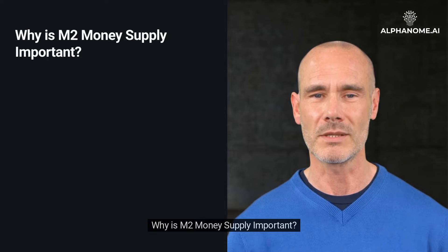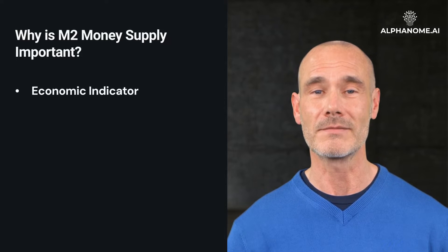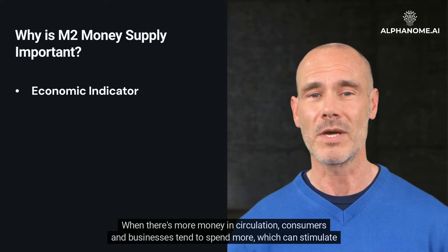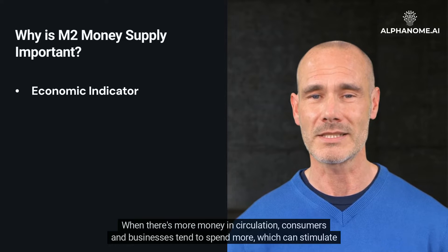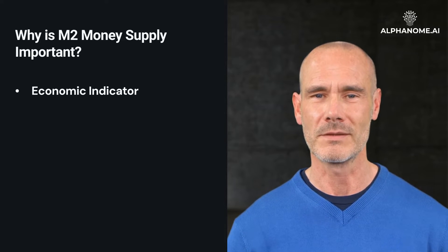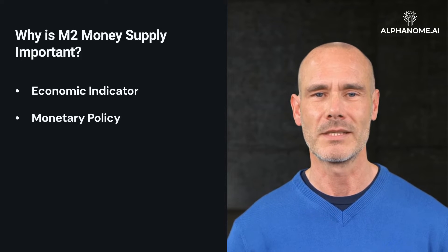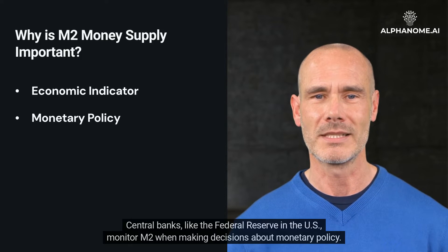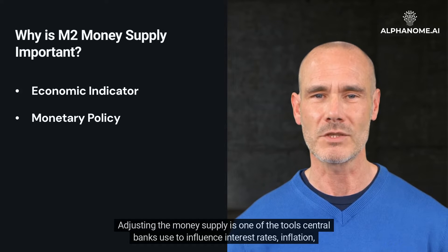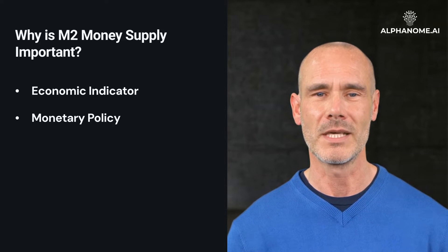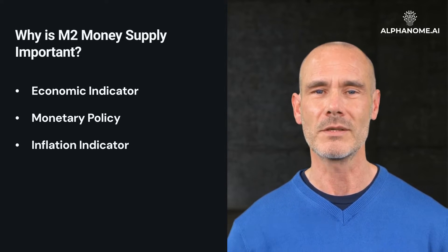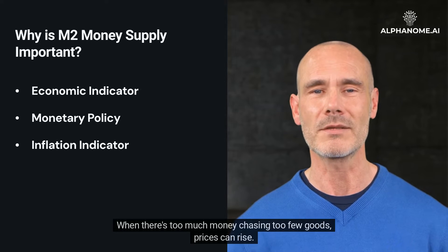Why is M2 money supply important? As an economic indicator, an increase in M2 can indicate potential growth in economic activity — when there's more money in circulation, consumers and businesses tend to spend more, which can stimulate economic growth. Regarding monetary policy, central banks like the Federal Reserve in the U.S. monitor M2 when making decisions, using adjustments to the money supply to influence interest rates, inflation, and overall economic growth. As an inflation indicator, rapid growth in M2 can sometimes signal impending inflation — when there's too much money chasing too few goods, prices can rise.